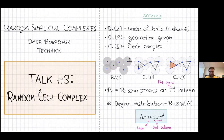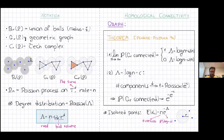The phenomena I want to talk about are very similar to the ones from yesterday — homological connectivity, appearance of cycles, and so on. But I'll start with one of the very first results for the random geometric graph: the phase transition for connectivity, very similar to the Erdős–Rényi theorem.